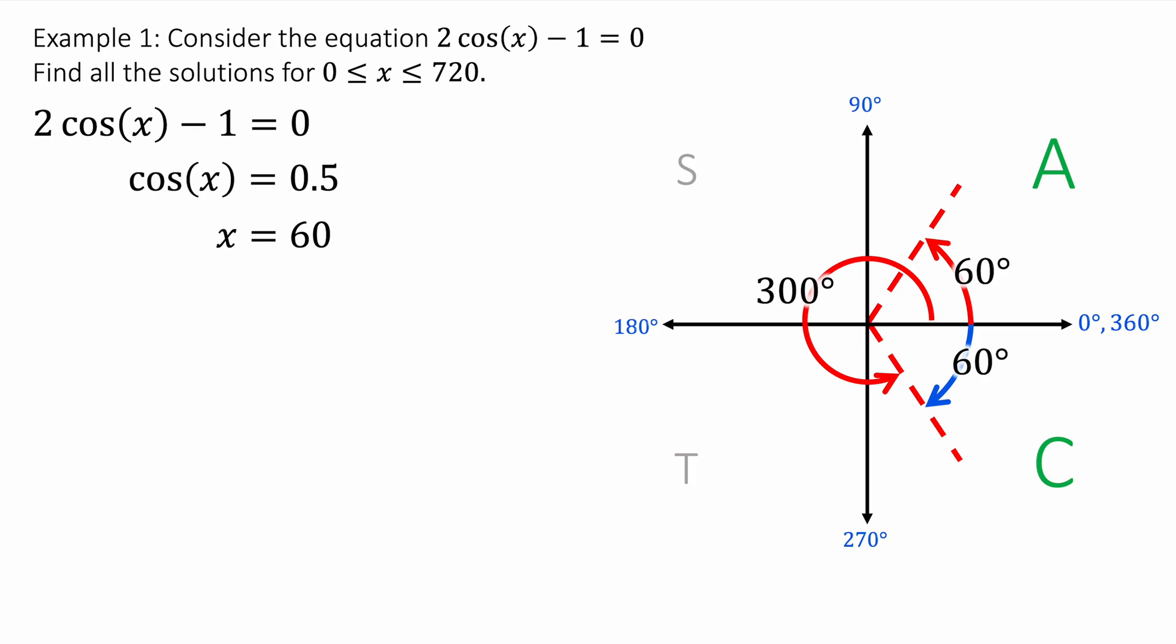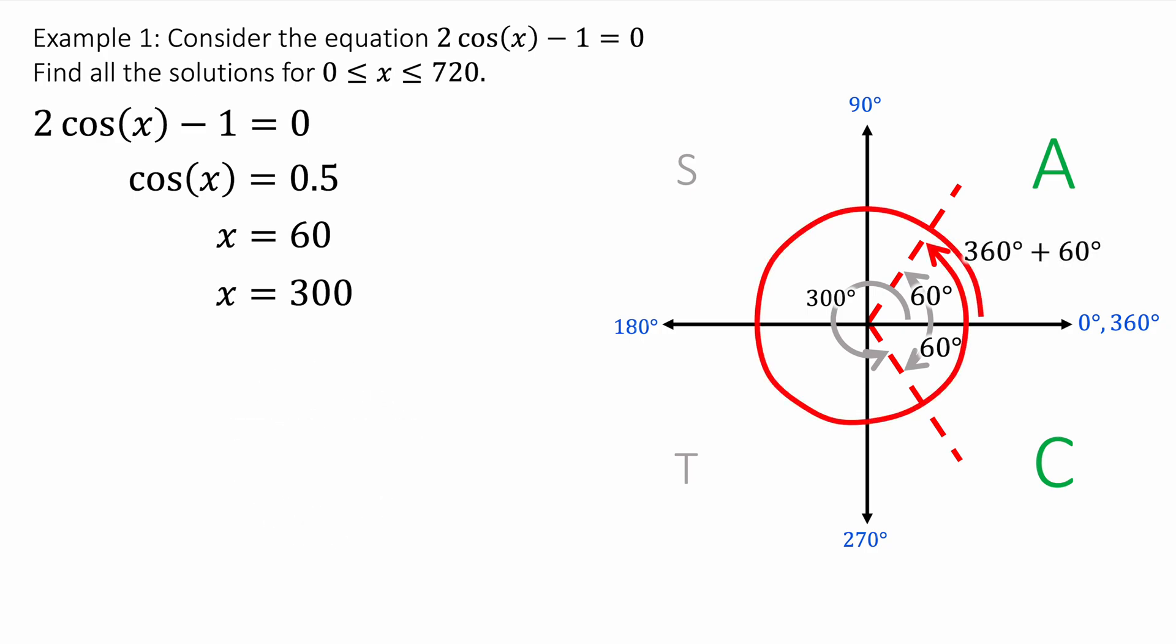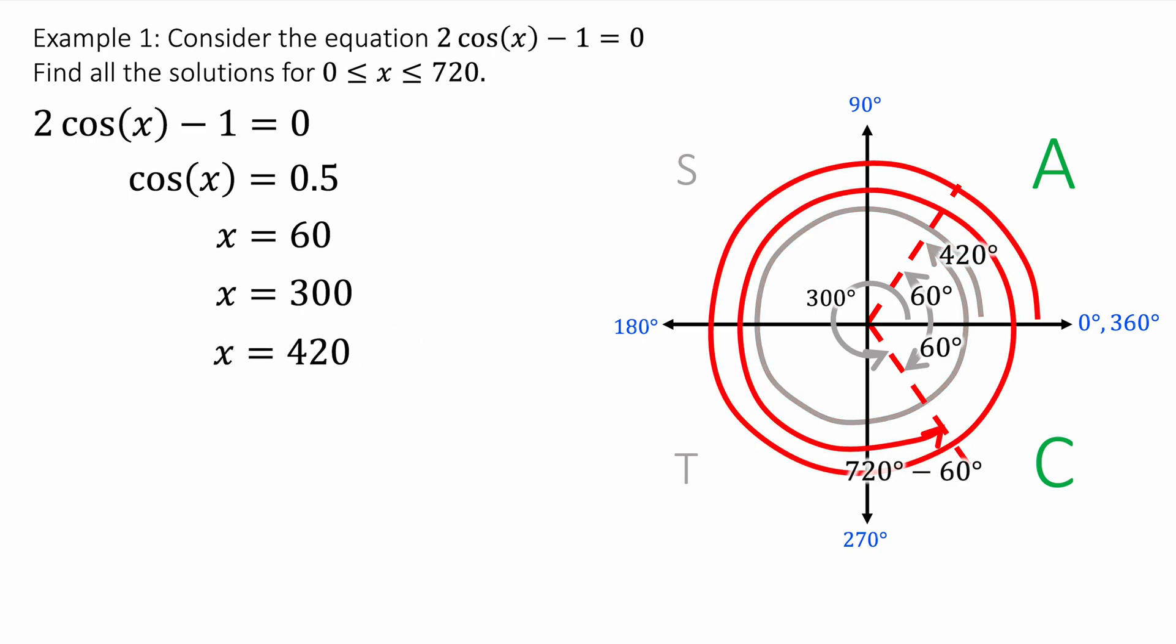And again, we just did that by doing 360 minus 60, because we knew the cos graph was positive in the cos quadrant and the all quadrant. We ignored the S and T quadrants because cos is not positive in those quadrants. Now remember we are going around the circle twice, so we're going to keep going. I've got another spiral, going all the way around, and I'm going back to where it said 60 degrees before. So I go all the way around once to 360 and keep going another 60 degrees, and I get another solution at 420 degrees. And finally, we've got another solution where we go all the way around to 720, but then I subtract 60 degrees because I go back a little bit. And 720 minus 60 is 660 degrees. All four answers here work.